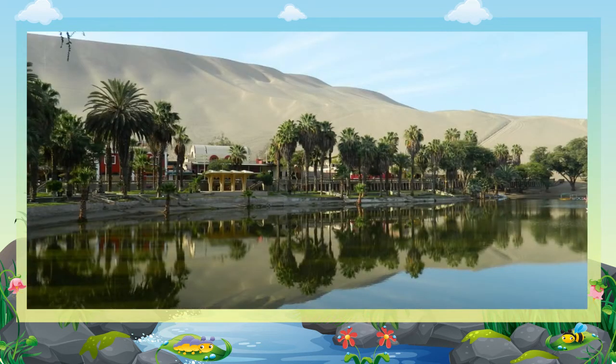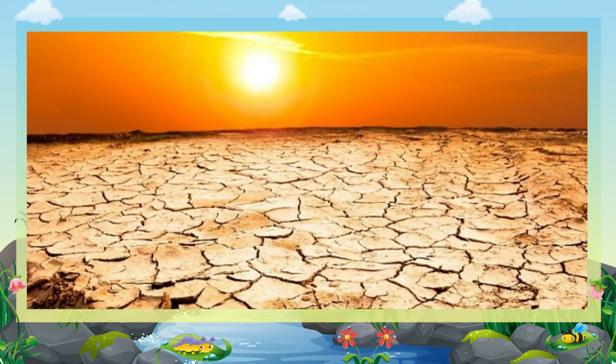At some places, underground water surfaces to form pools of water called oases. These areas are the only fertile areas in the desert. During occasional heavy rains, dry valleys called wadis are temporarily filled with water, but the water soon evaporates due to extreme heat.